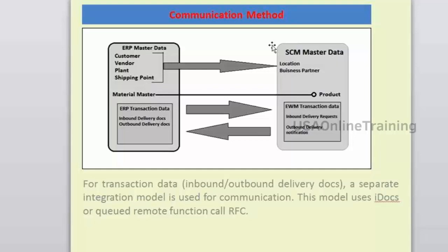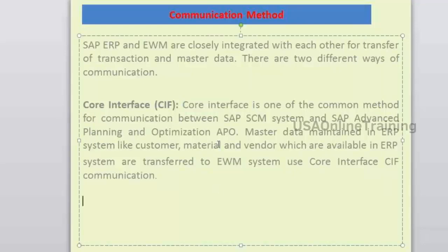With two connected systems, data flows in between: master data and transactional data. Master data includes customer master, vendor master, shipping points, and plants — all these must be transferred into the EWM box. The transfer happens through the Core Interface (CIF) — transactions CFM1 and CFM2 in ECC push master data into the EWM box.